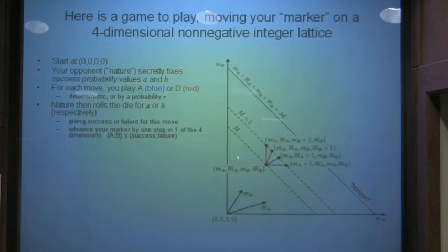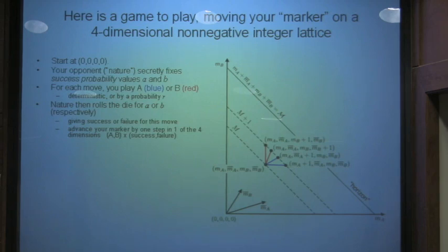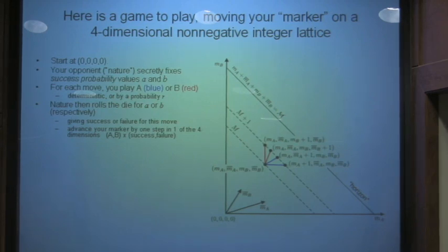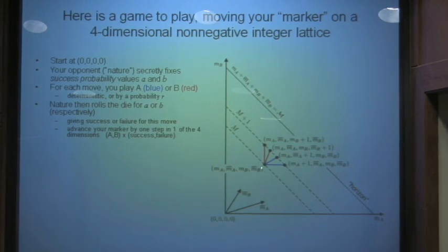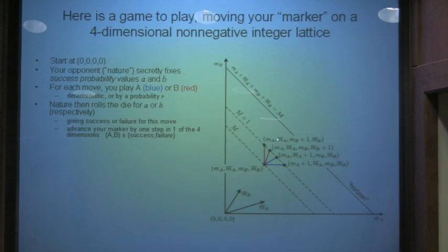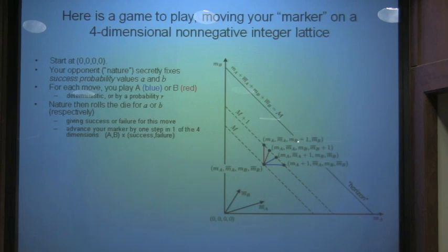To keep track of where we are in the game, we move our marker exactly one step. The marker keeps track of the number of successes of A, the number of failures of A, the number of successes of B, and the number of failures of B. So nature doesn't care about this lattice, this is just our accounting scheme of knowing the accumulated successes that we've seen or not seen.